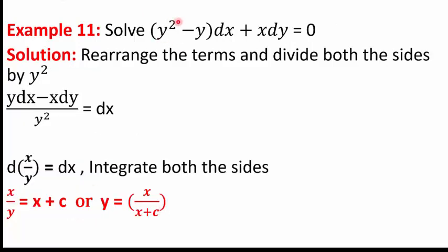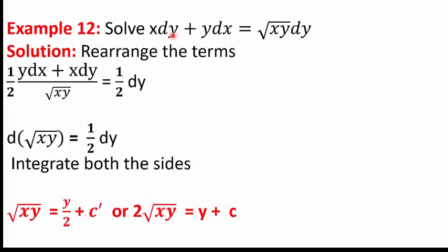In question 11, we solve (Y² − Y)dX + X dY = 0. Collecting Y dX and X dY together and dividing by Y²: (Y dX − X dY)/Y² = −dX, which is nothing but d(X/Y) = dX. Wait — rearranging: (Y dX − X dY)/Y² = dX gives d(X/Y) = dX. Integrating: X/Y = X + C, which simplifies to Y = X/(X + C).